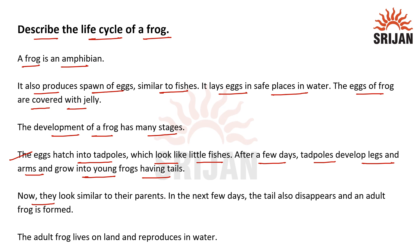Now they look similar to their parents. In the next few days, the tail also disappears and an adult frog is formed. The adult frog lives on land and reproduces in water.